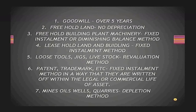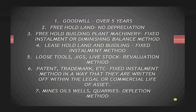For leasehold land and building, we use only the fixed installment method. For loose tools, jigs, and livestock, we use the revaluation method of depreciation. For patents and trademarks, we use the fixed installment method, writing them off over their legal or commercial life — in other words, amortization is done for these assets. For mines, oil wells, and quarries, the depletion method is used.